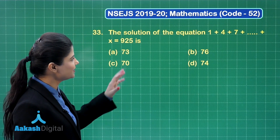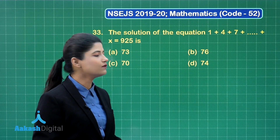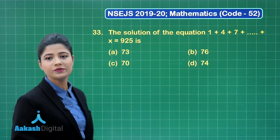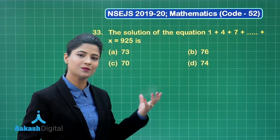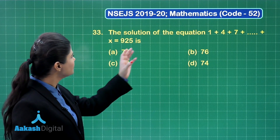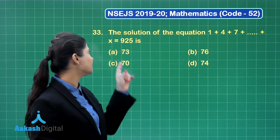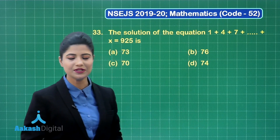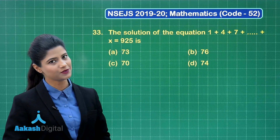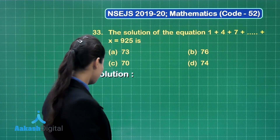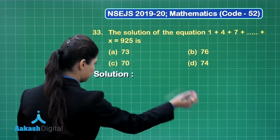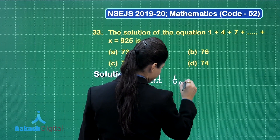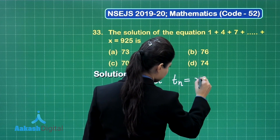You can observe that on the left hand side we have terms like 1, 4, 7 — this definitely forms an arithmetic progression. The terms on the left hand side represent the sum of n terms of an AP, where the last term is x. Let us consider that the nth term of this arithmetic progression is x.